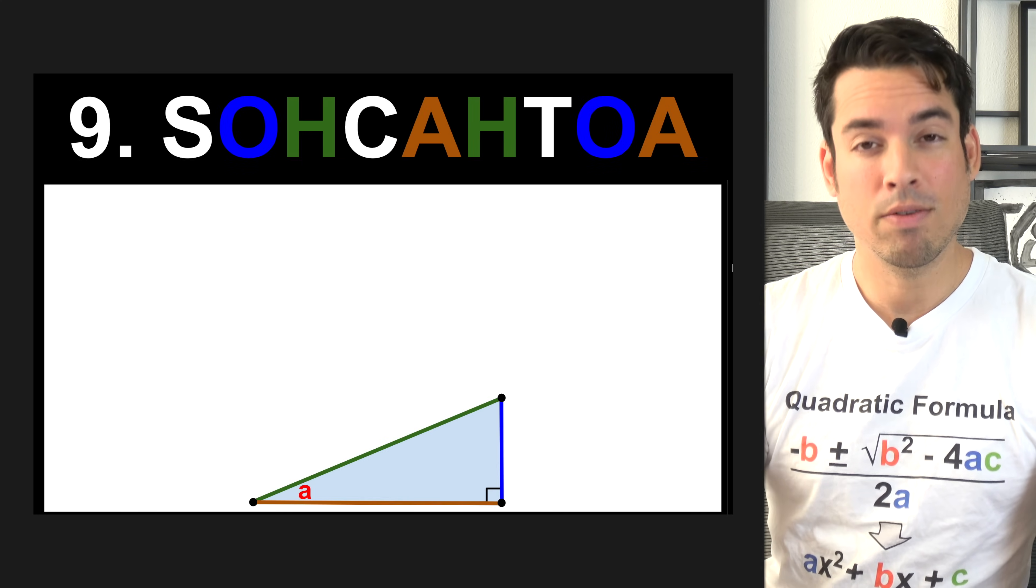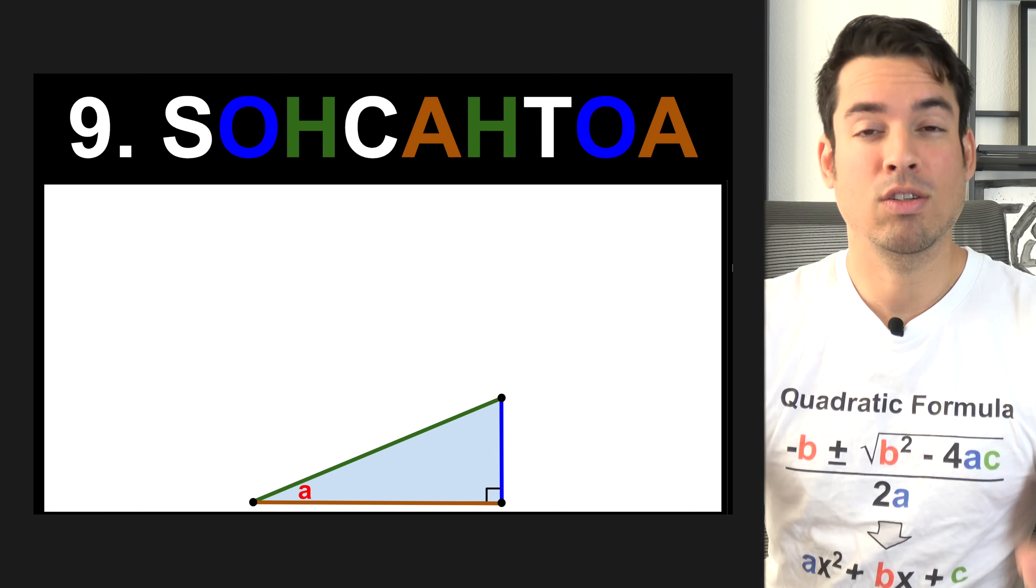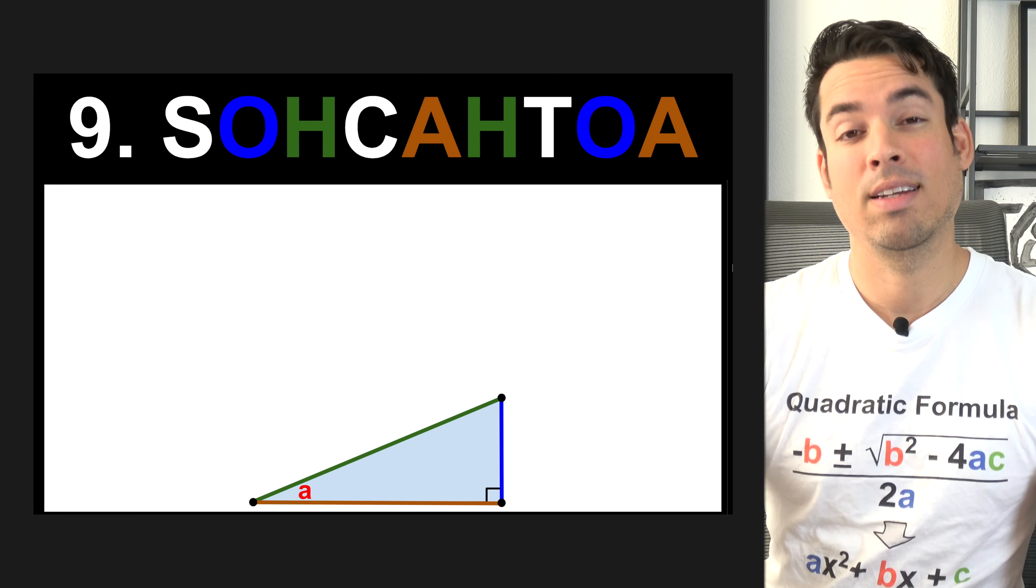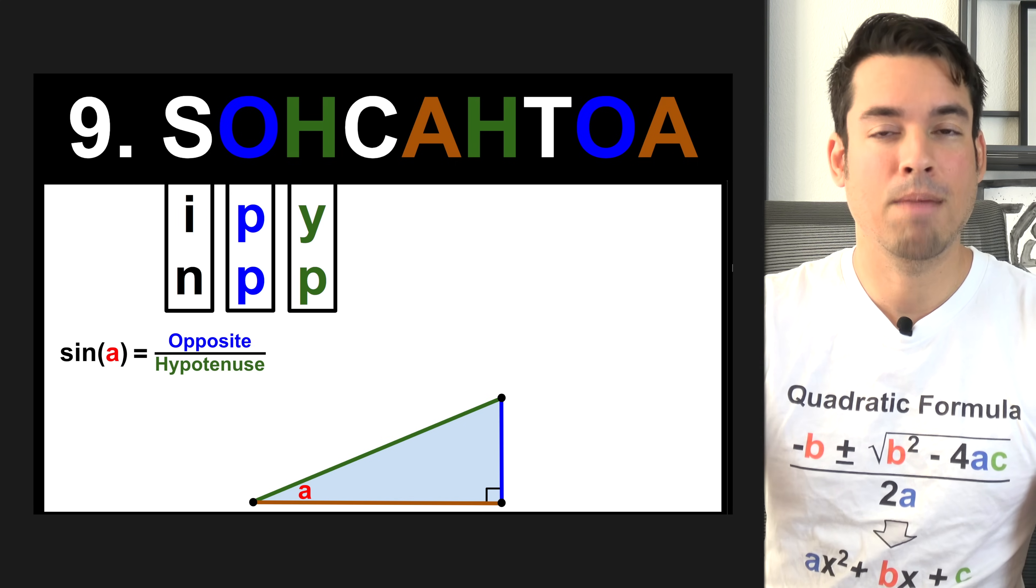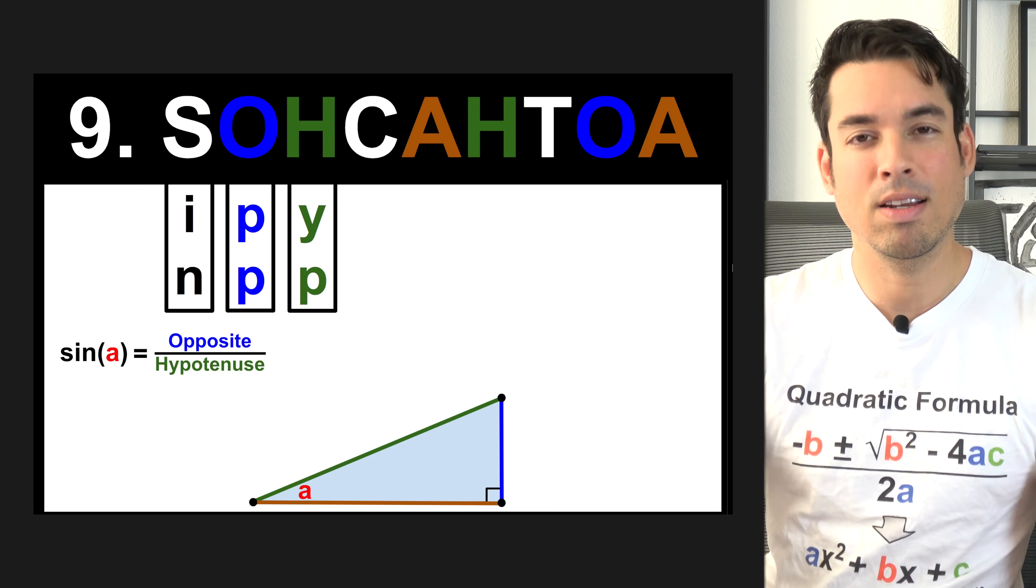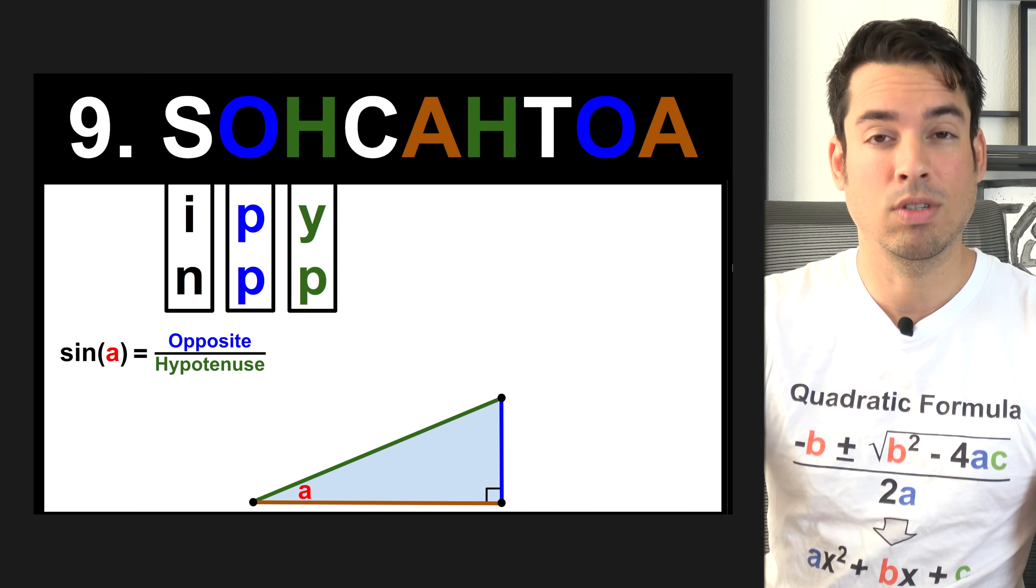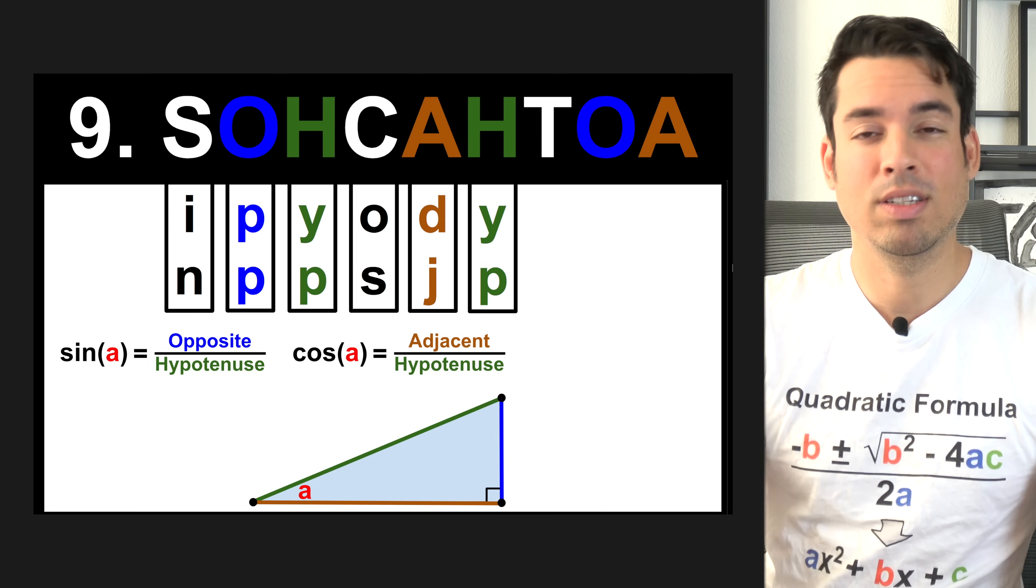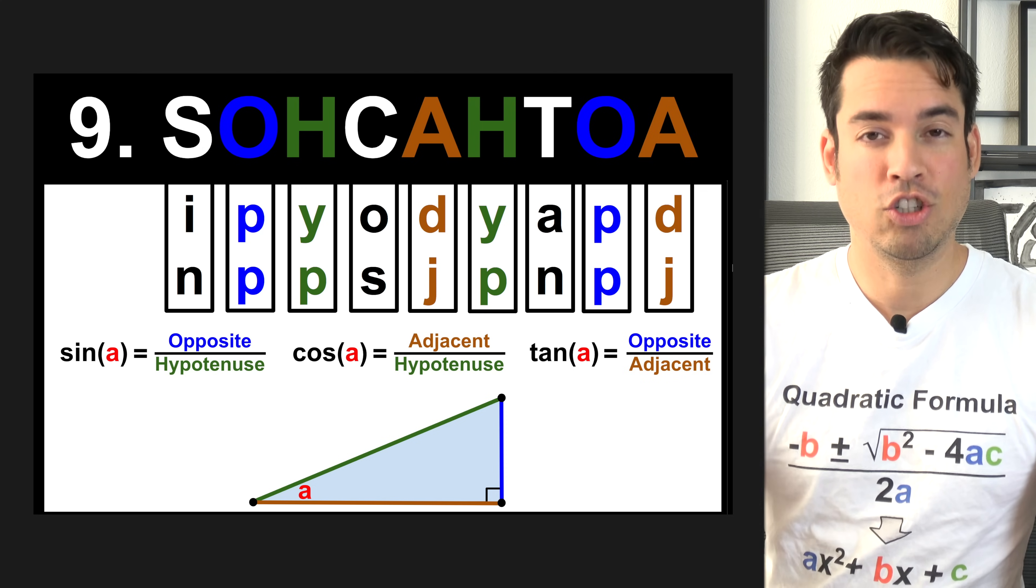Next, we have SOHCAHTOA for trigonometry. Here's an example triangle, and SOHCAHTOA is all based around which angle you choose. For these examples, we are choosing angle A highlighted in red. SOH stands for sine opposite over hypotenuse. So sine of angle A equals opposite angle A over the hypotenuse. CAH stands for cosine is adjacent over hypotenuse, relative to A. Last but not least, tangent is equal to opposite over adjacent.